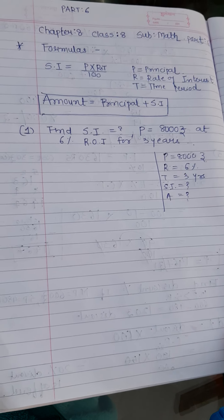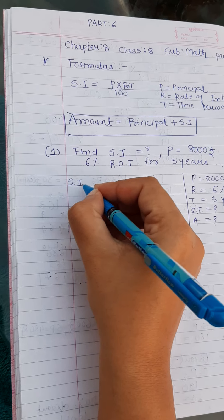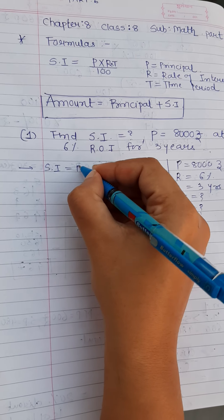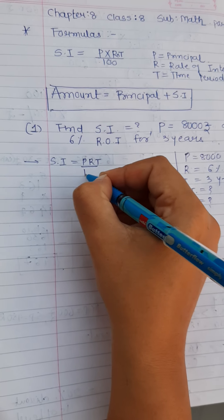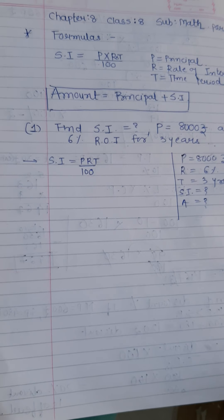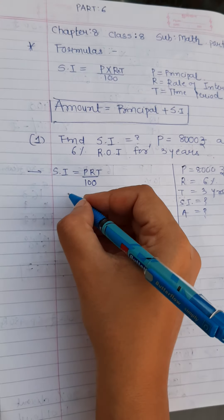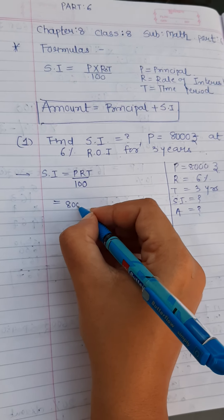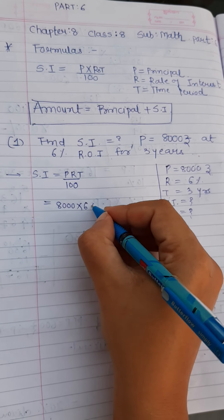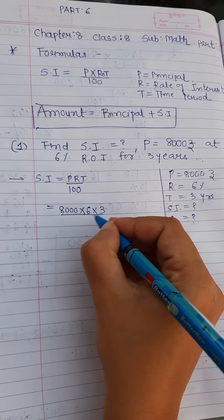Okay. So first of all let's put the formula. First step, simple interest is equals to PRT upon 100. Right. So PRT upon 100. Here P is 8,000, rate of interest is 6, T is 3, upon 100.